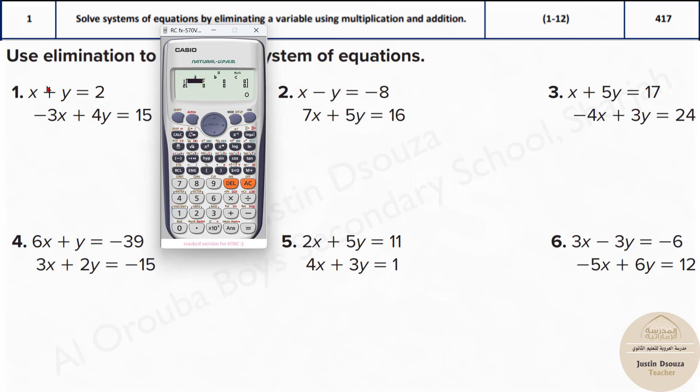Press 1 and now just type the numbers before x and y. If there is nothing, it's 1. For this problem, the coefficient of x is 1, the coefficient of y is 1, and the constant term must be on the right side of the equal sign, which is 2.